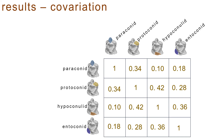To explore this covariation further, we quantified the phylogenetic correlation between the four segments. The curvature of the paraconid was significantly correlated with the curvature of the protoconid, but was largely independent of the curvature measured for the hypoconulid and the entoconid. Meanwhile, the protoconid, hypoconulid, and entoconid were all significantly correlated with one another.